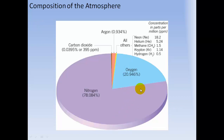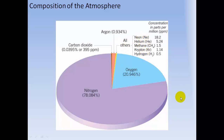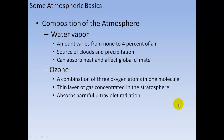Most clean, dry air is 78% nitrogen, about 21% oxygen, almost 1% argon, and only about 0.04% carbon dioxide. About the rest is all the other gases like neon, helium, methane, krypton, and hydrogen.